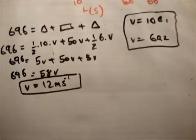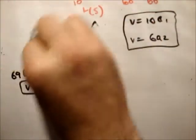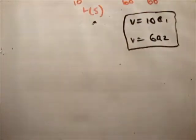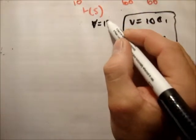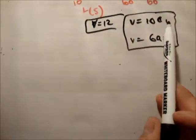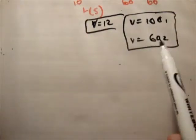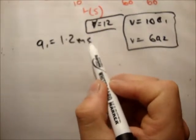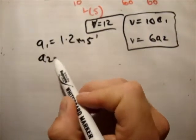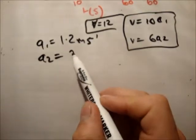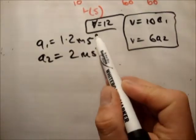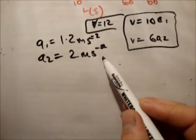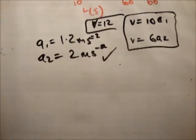And because we have V, we're able to get our accelerations. So in order that V is equal to 12, therefore, A1 is equal to 12 over 10, 1.2 meters per second squared. And A2 is equal to 12 divided by 6, which is 2 meters per second squared. Both of those are correct. So that was reasonably straightforward. And that's part A complete.